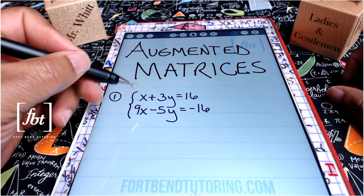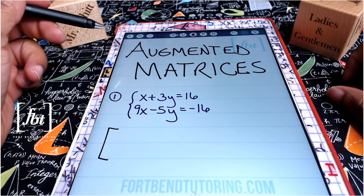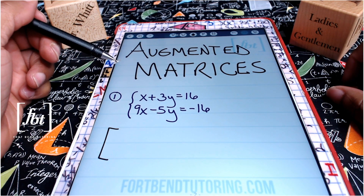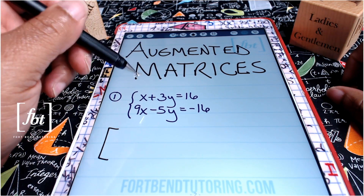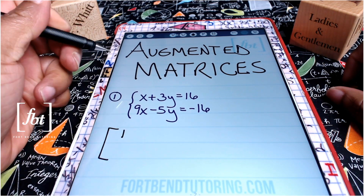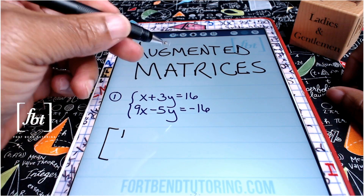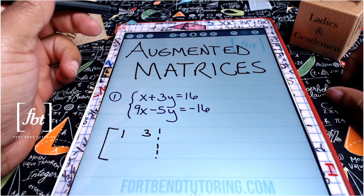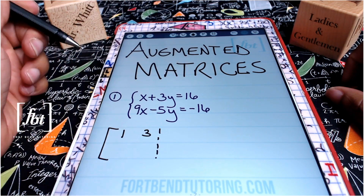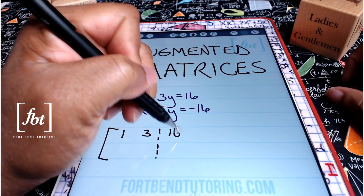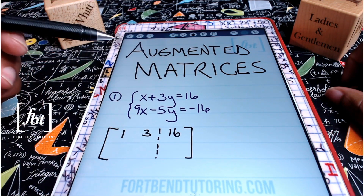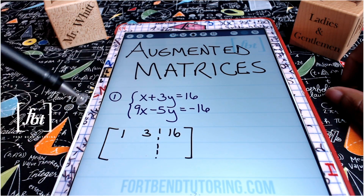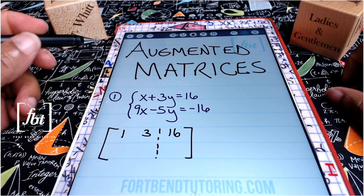In order to write our augmented matrix, we're going to open up our matrix here. What we'll do is take the coefficients from each one of the three terms in our standard form of the linear equation. I'll be taking the one coefficient from the first term of x in the first equation, and then I'll be taking the three from the second term in that first linear equation. Then we'll use a bar here to represent the terms that will lie on the right side of the equation, so I'll have a 16 there.